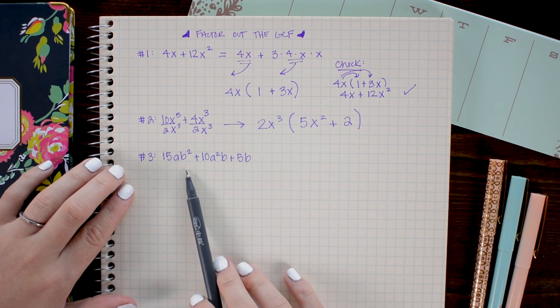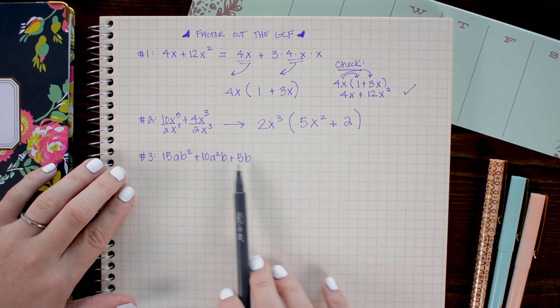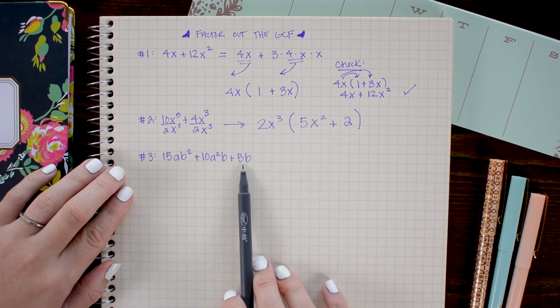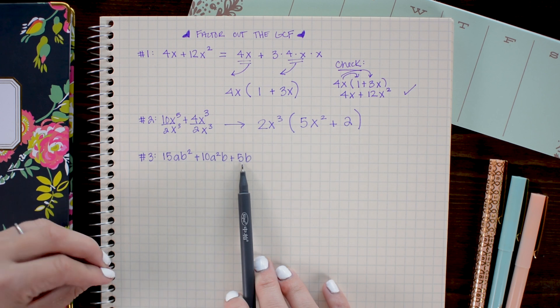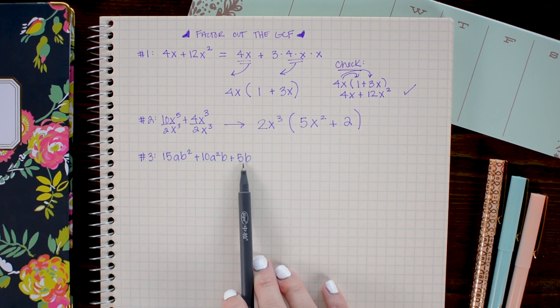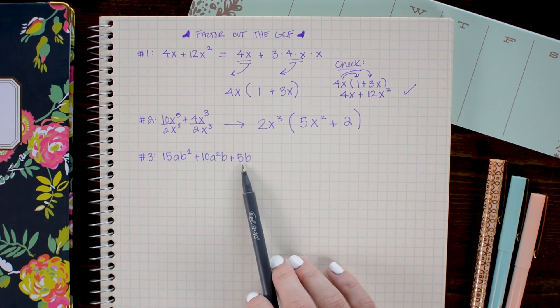The same technique holds no matter how many terms we have in our expression. We just need to make sure that each of those terms is divisible by the same values. So I'm going to begin by looking at the coefficients.